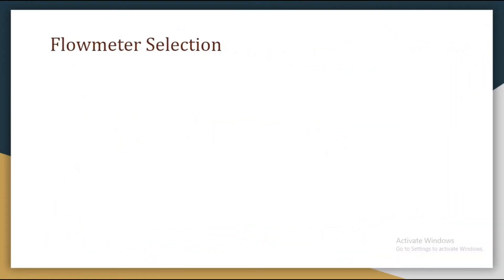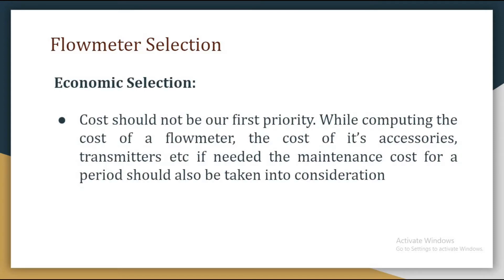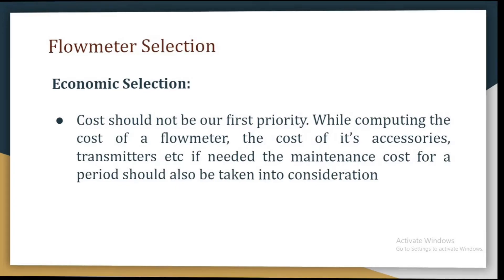The final criteria for flow meter selection is economic selection. Cost should not be our first priority, but while computing the cost of a flow meter, the cost of its accessories and transmitters, as well as maintenance cost over a period, should also be taken into consideration.